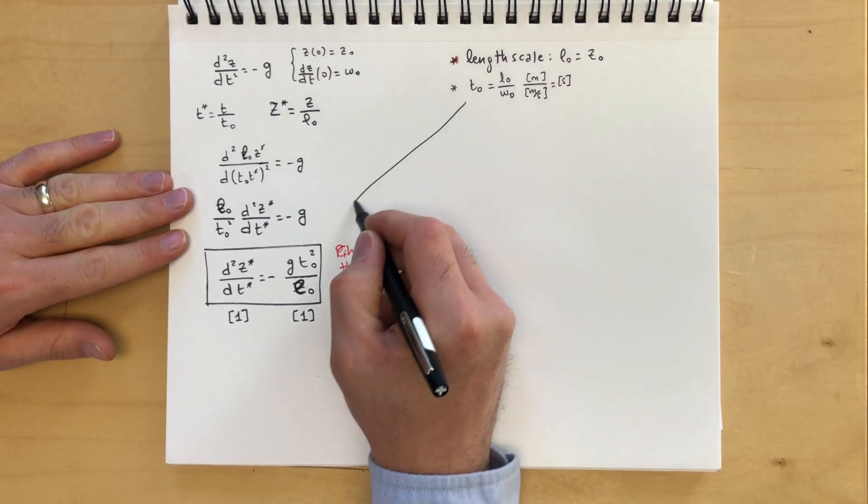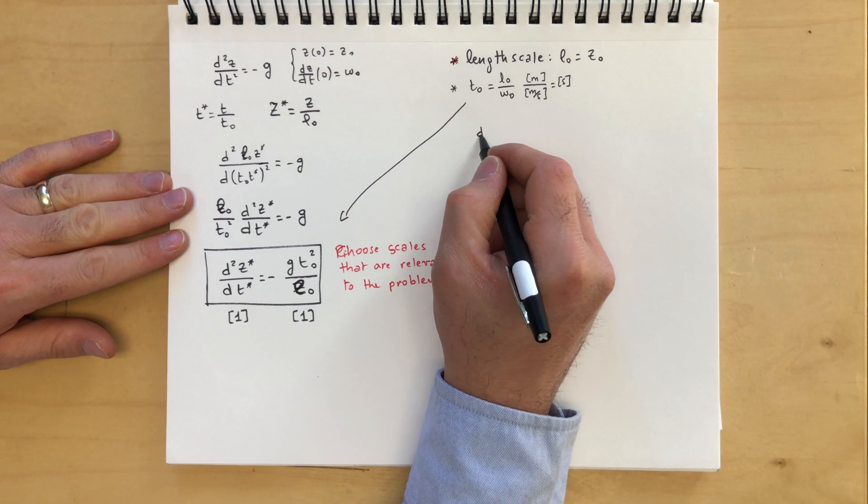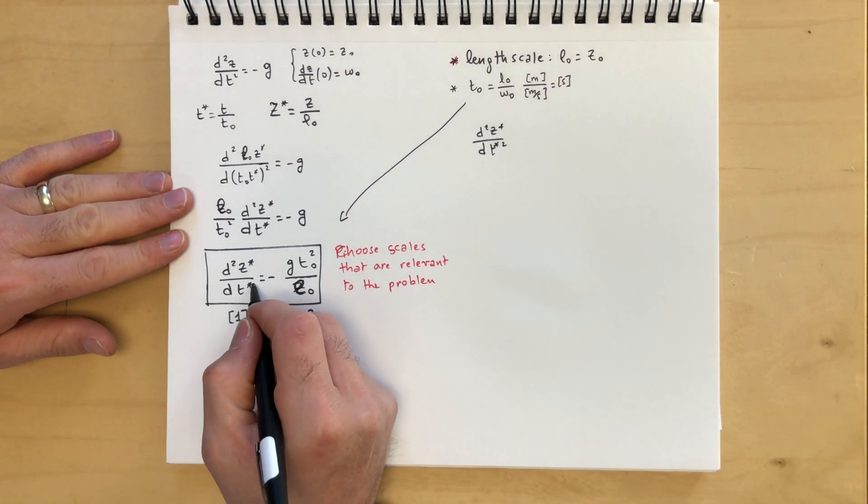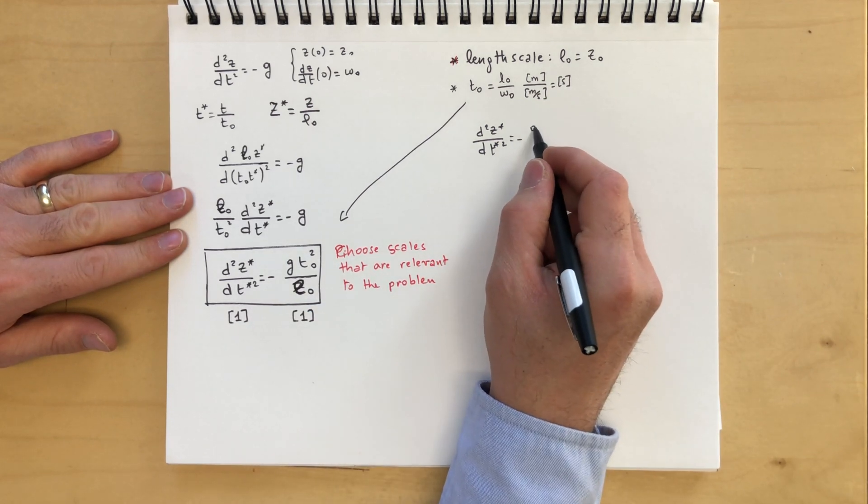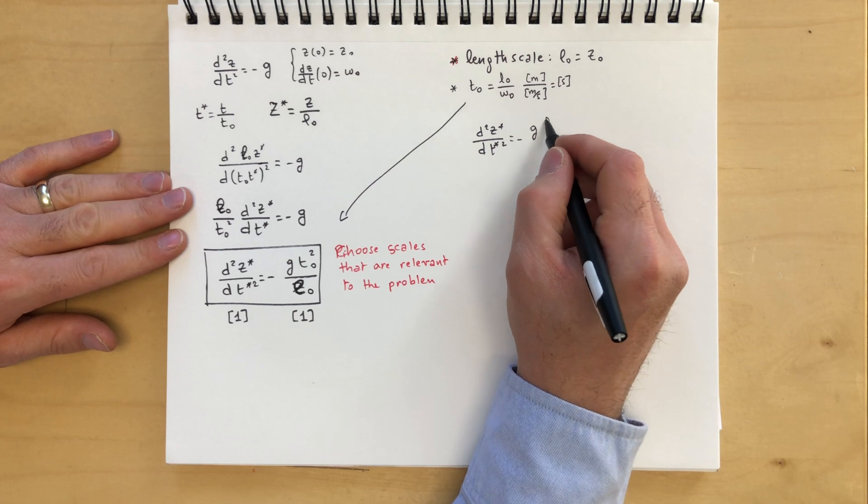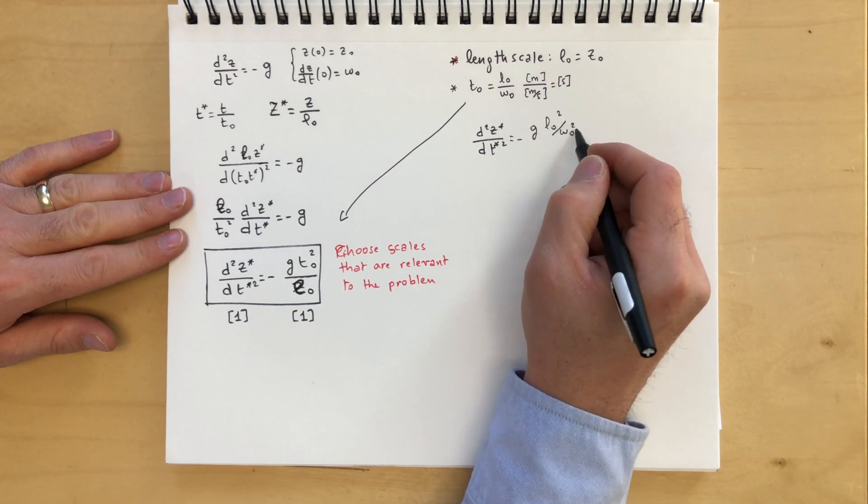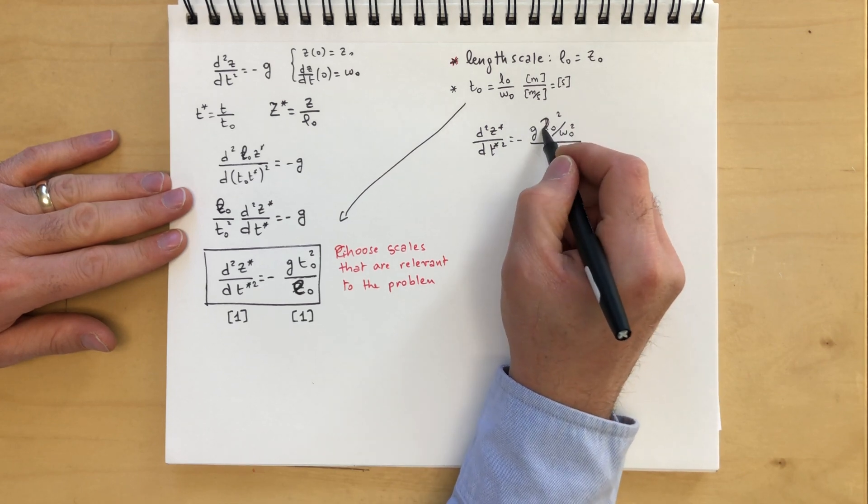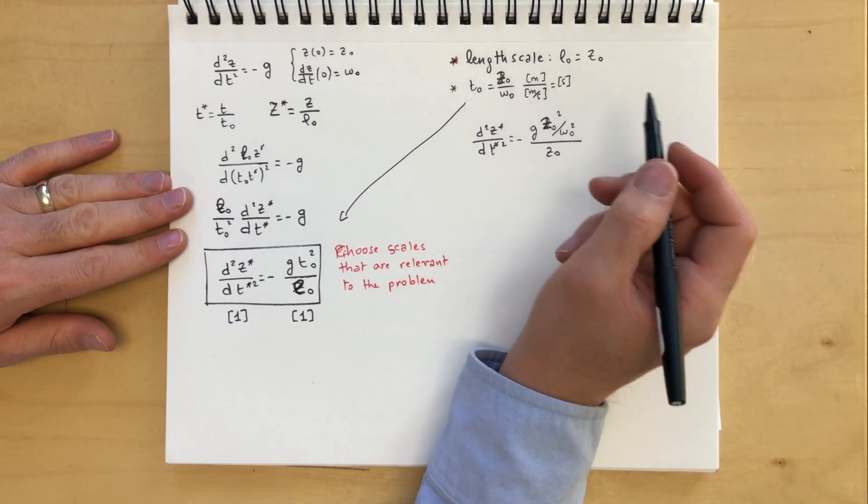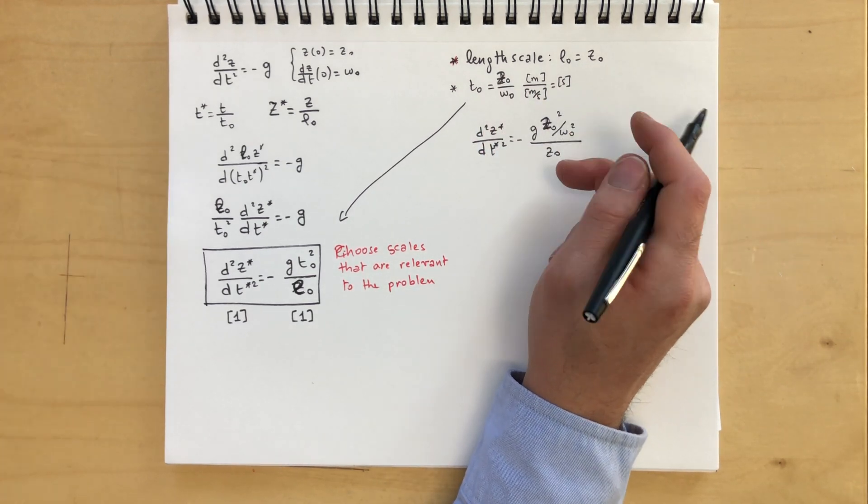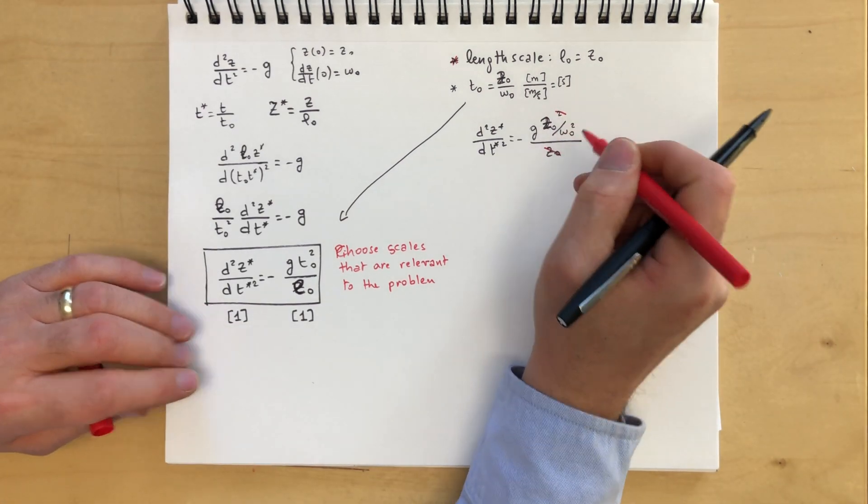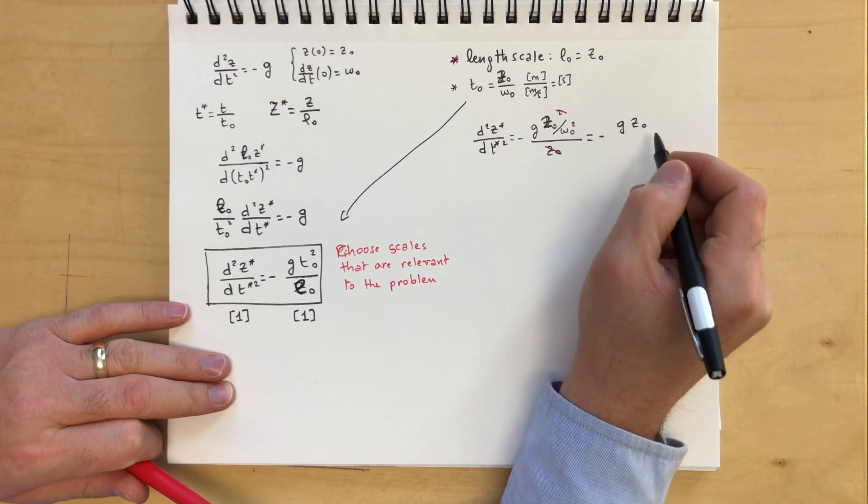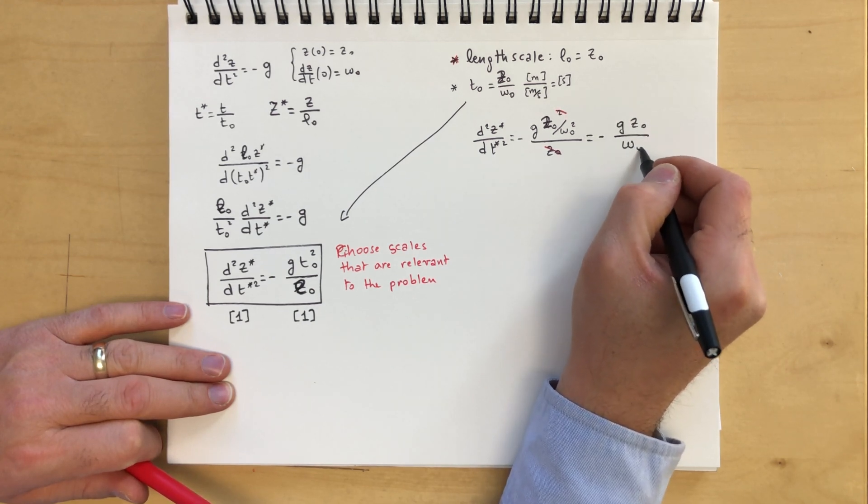Now, if we plug these back in here, what do we get? We get d²z*/dt*² equal to minus G. What is T0 squared? It's L0² over W0² over L0. What is L0? It's z0. So I'm going to put this as z0. So then what we can do here, we can cancel out. This guy, cancel out that guy, and we get minus gz0 over w0².